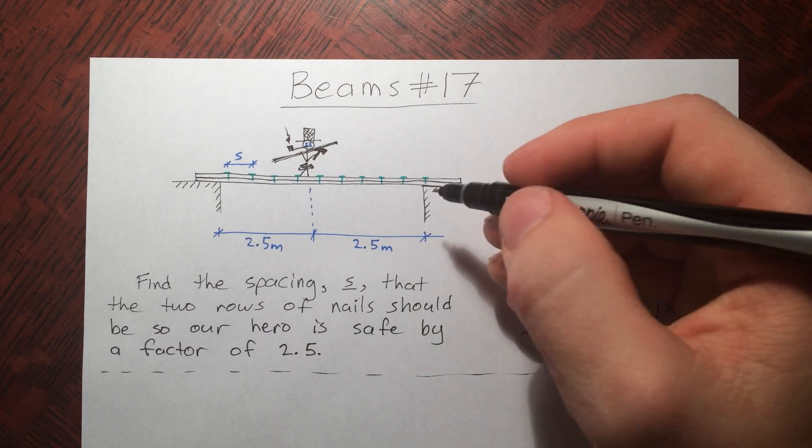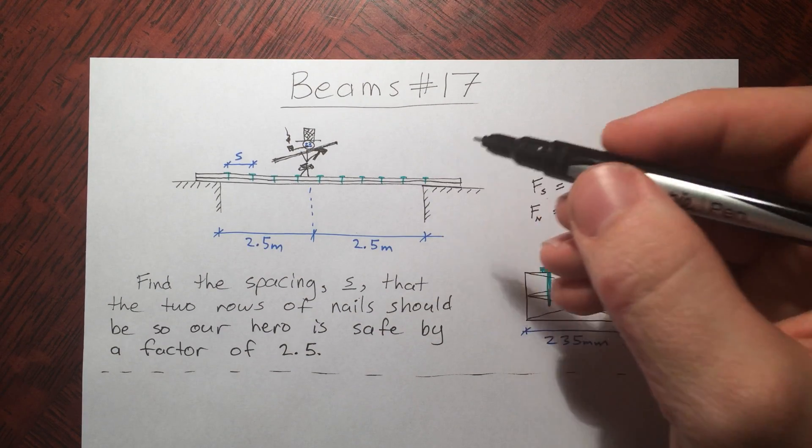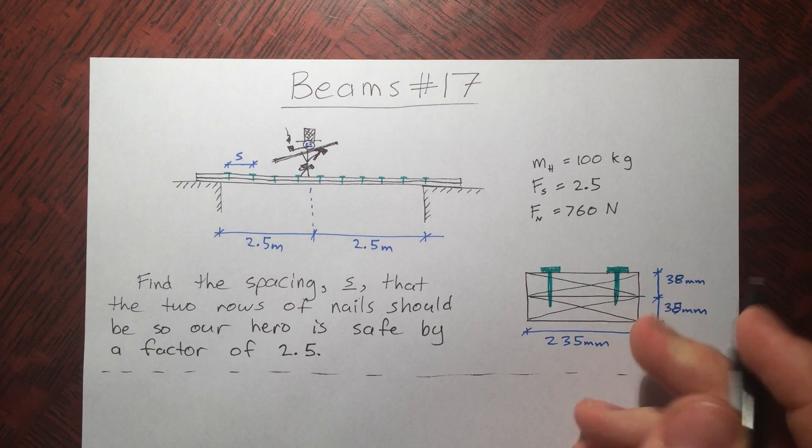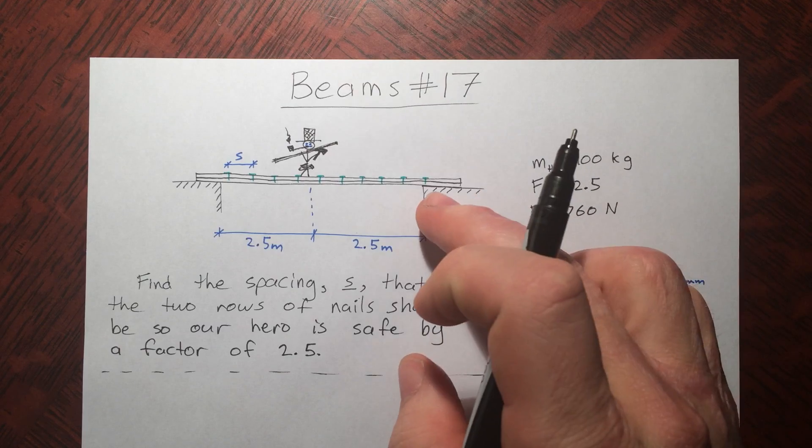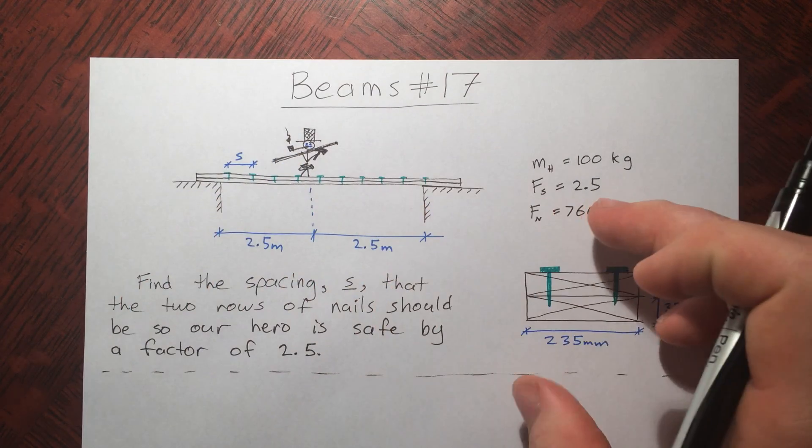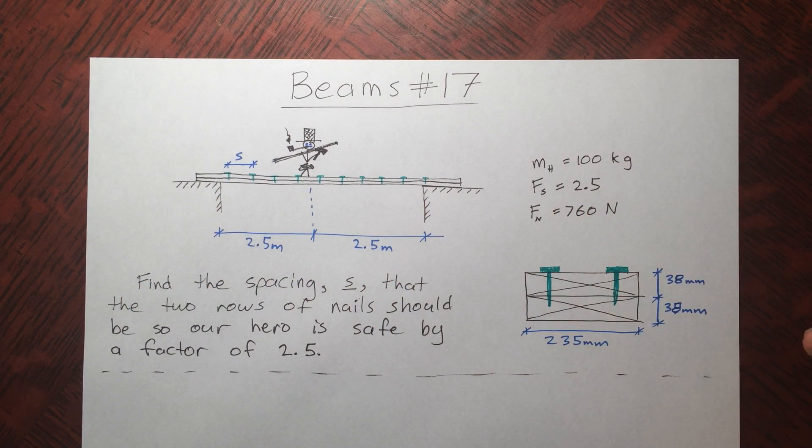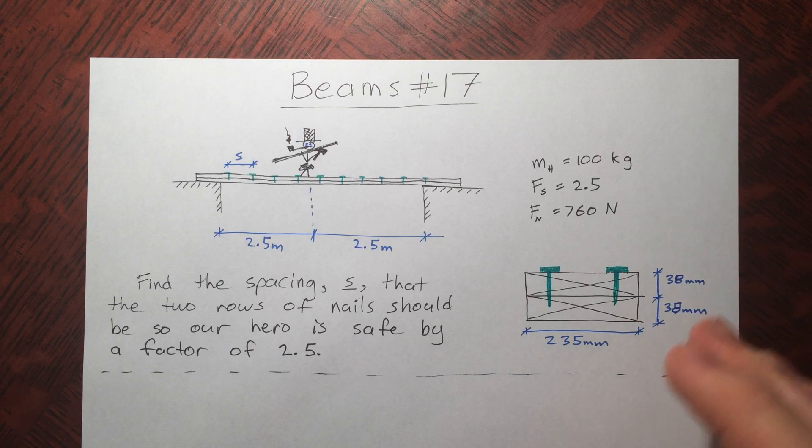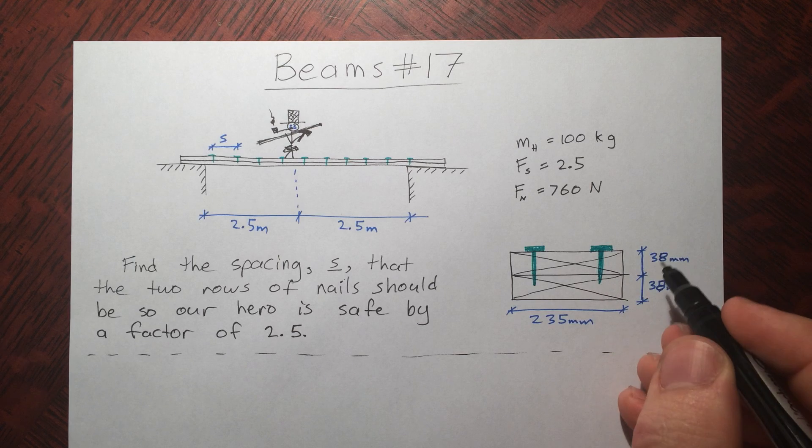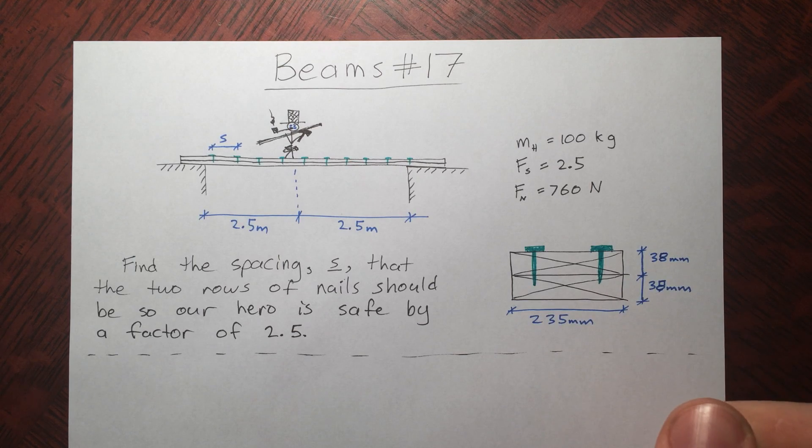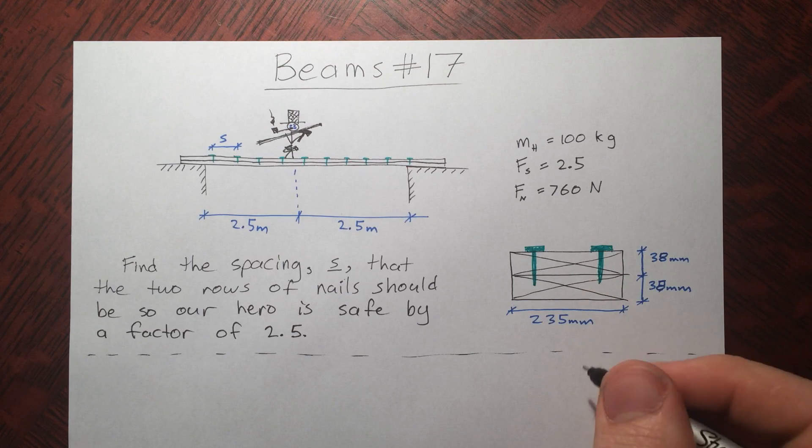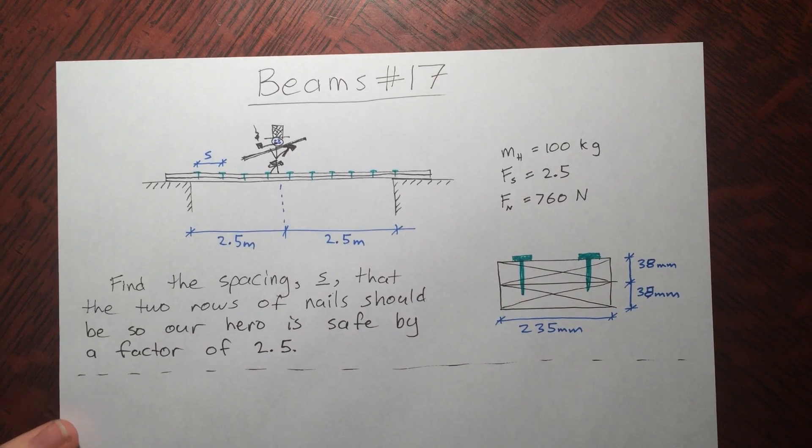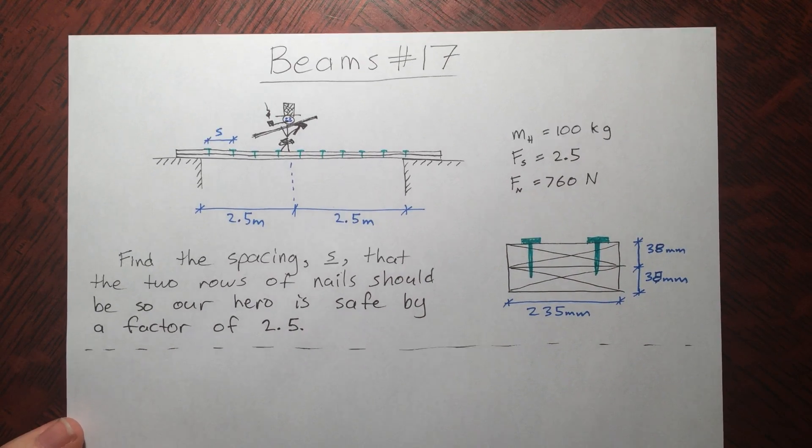And we need to keep him safe by a factor of 2.5 by determining what the spacing between these two rows of nails should be so that when he's on this beam made out of two pieces of wood, nailed together, that he's safe. These are 2x10s. For our American friends, I've converted the units into metrics. I'll convert it back at the end and give you some inches if you like that.